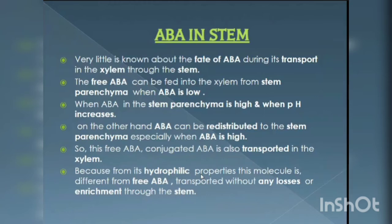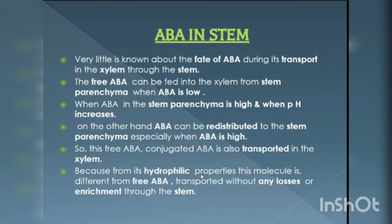ABA in Stem. Very little is known about the fate of ABA during its transport in the xylem through the stem. Free ABA can be released into the xylem from stem parenchyma when ABA levels are low. When ABA in the stem parenchyma is high and when pH increases, ABA can be redistributed to the stem parenchyma essentially when ABA is high. Free and conjugated ABA is also transported in the xylem because of its hydrophilic properties. This molecule is transported without any losses or enrichment through the stem.